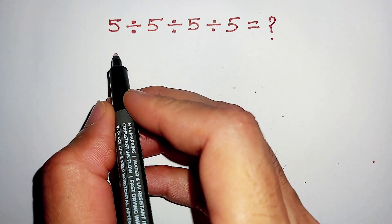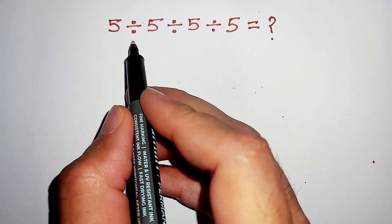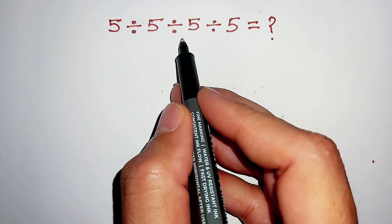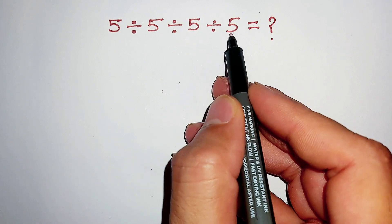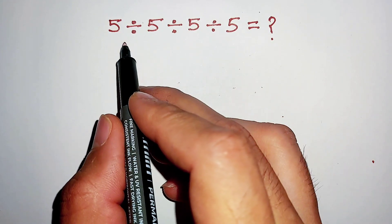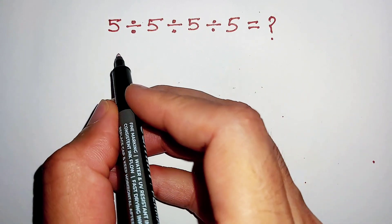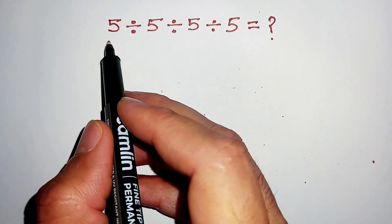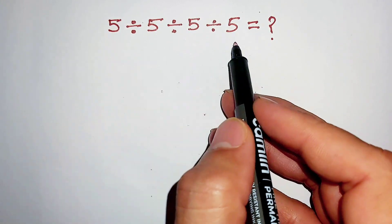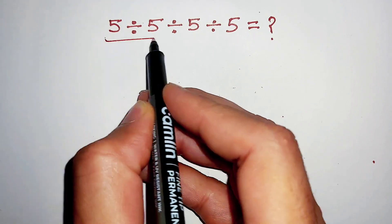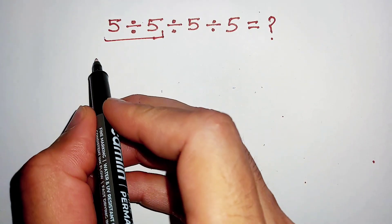Hello dosto, the question is 5 divided by 5 divided by 5 divided by 5, and we would simplify this question. We solve this from left to right. First we solve 5 divided by 5.